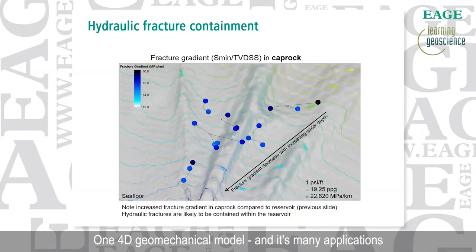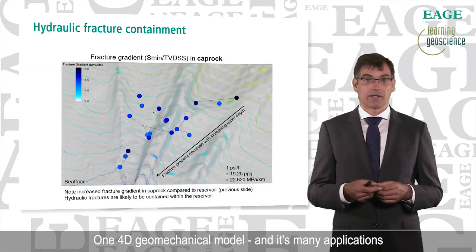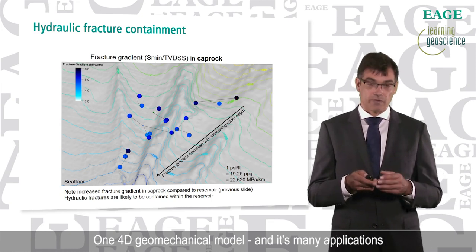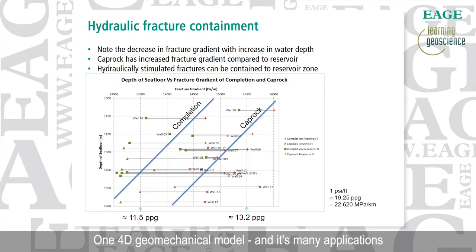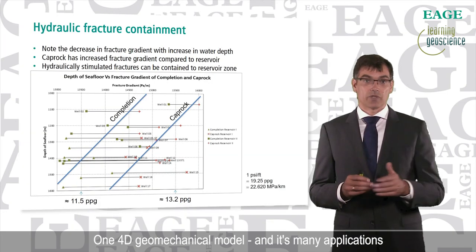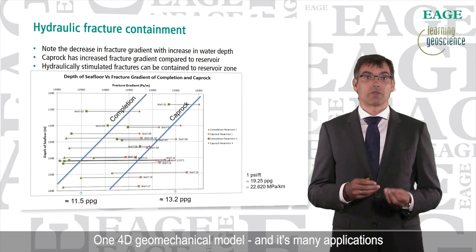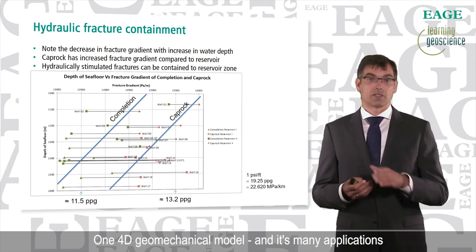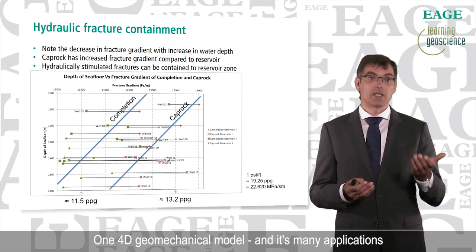We can summarize these points in a table. The takeaway is that we have a markedly increased fracture gradient in the caprock compared to the reservoir, which implies that hydraulic fractures are likely to be contained within the reservoir. On the horizontal axis, for each well we plot the fracture gradient as an equivalent mud weight: green crosses for the sandstone fracture gradient at completion, and red crosses for the fracture gradient within the caprock. On the vertical axis is water depth above the completion. Again, you can see the trend lines with fracture gradient decreasing with increasing water depth.